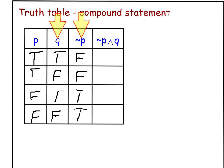So with and, when I have a true and a false, my conclusion for and is false. When I have false and false, my conclusion is false.